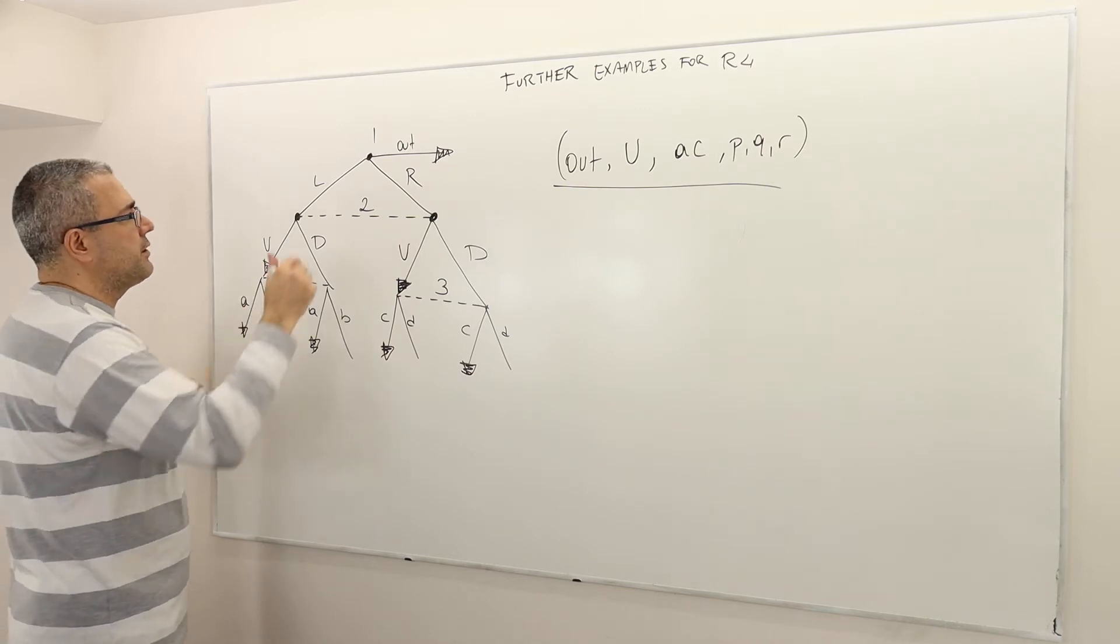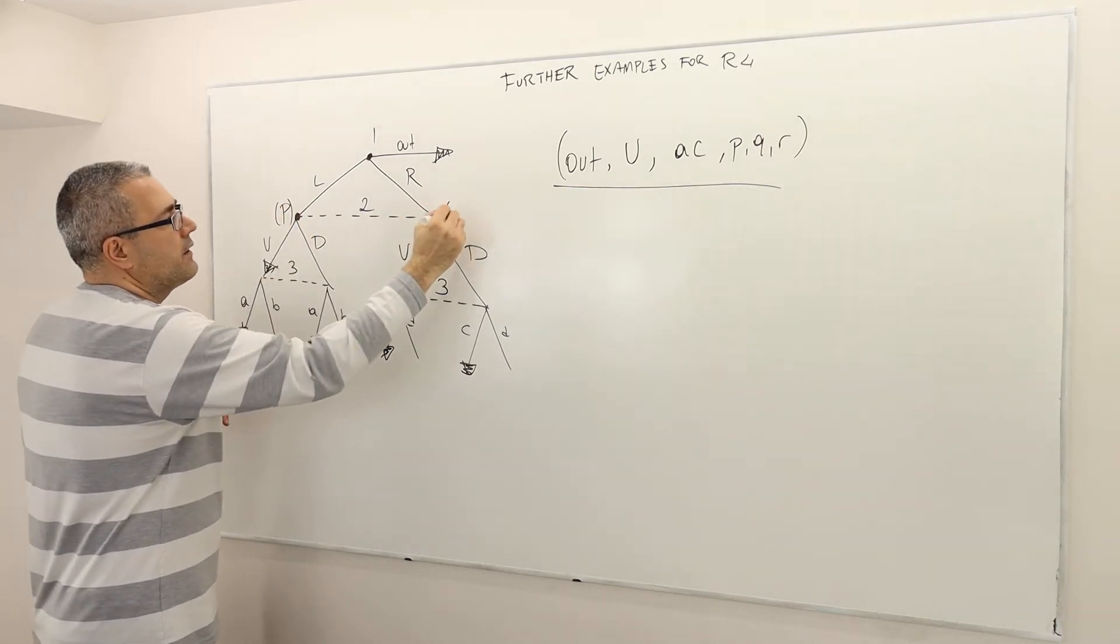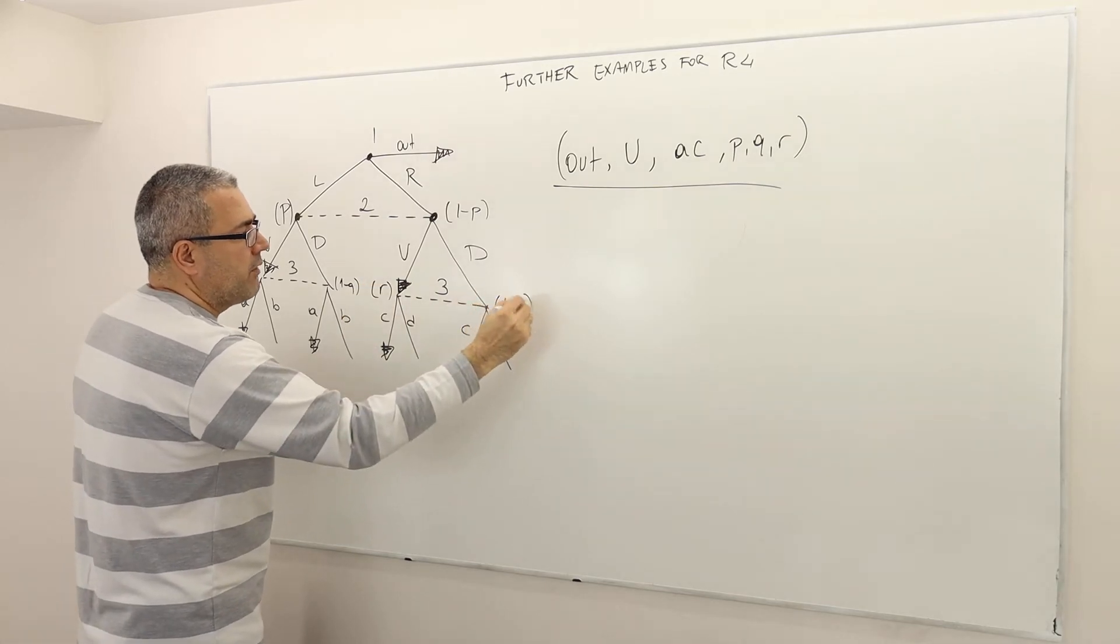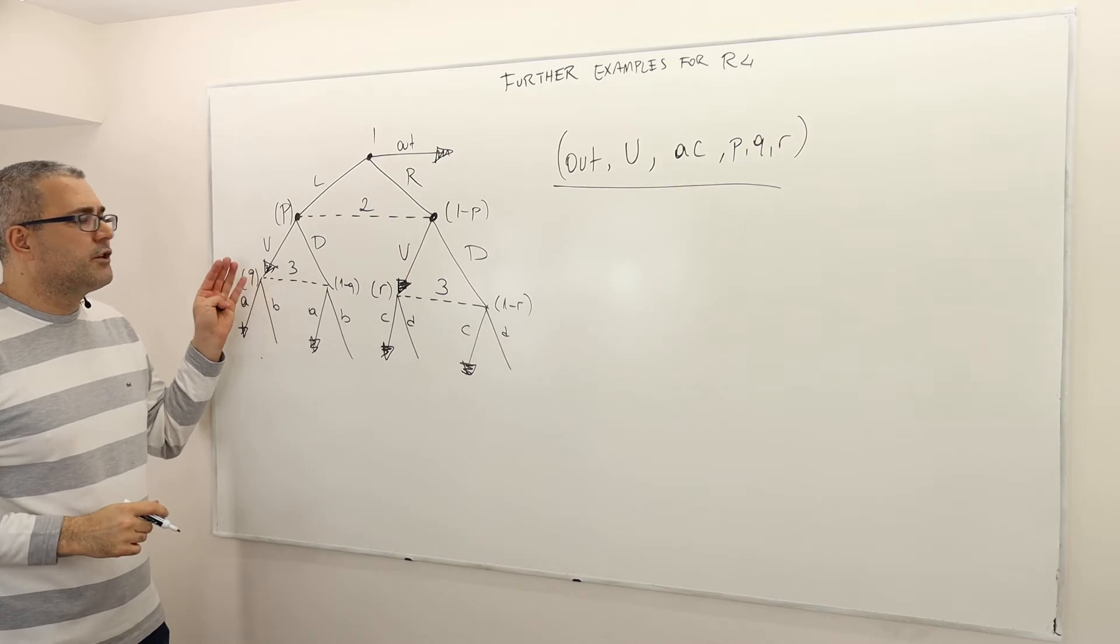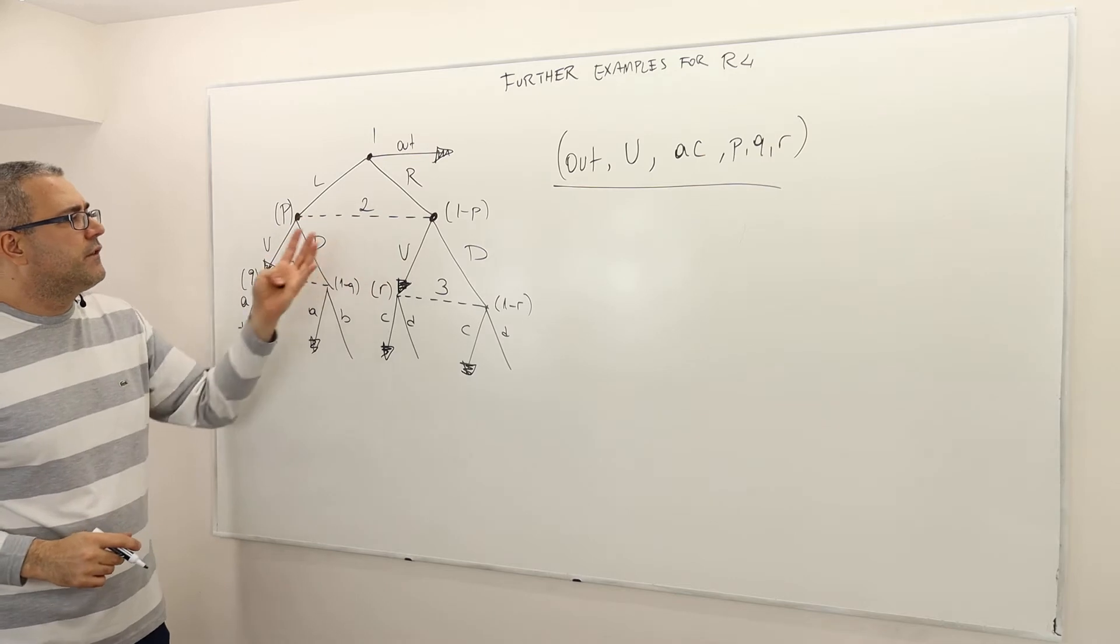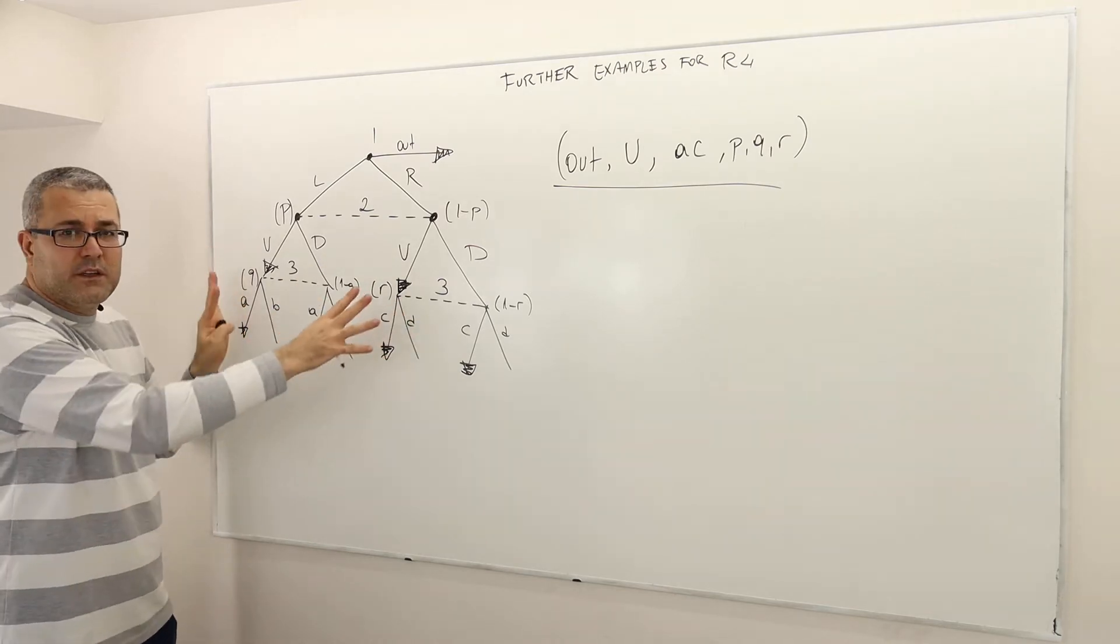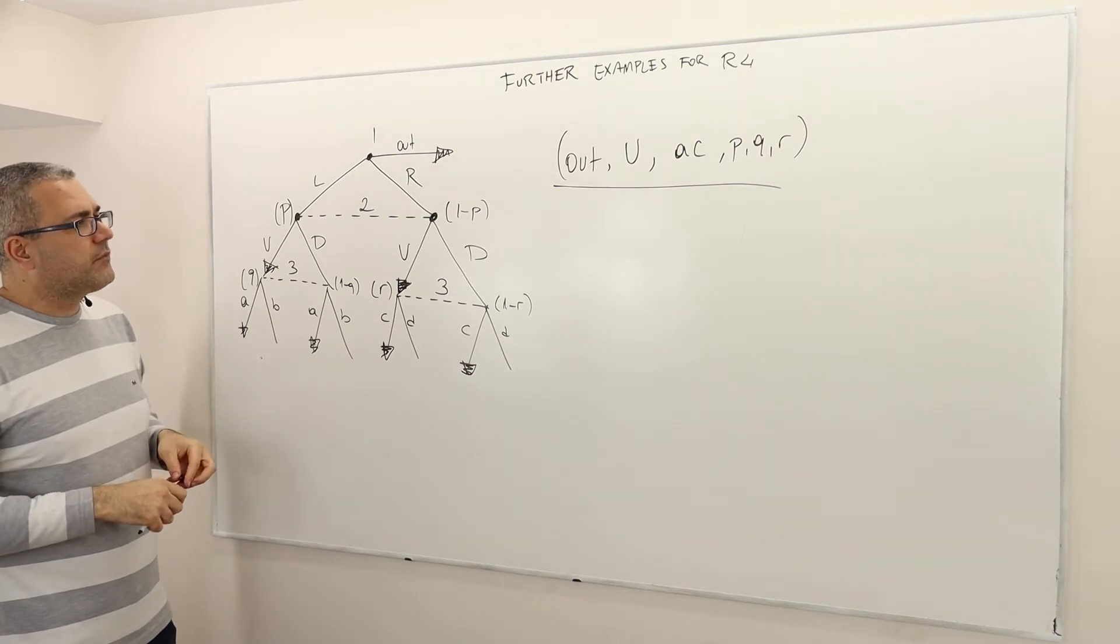Let's call this P and this 1 minus P. This Q, this is 1 minus Q. This is R, this is 1 minus R. Remember, requirement 3 was telling me that there should be probability distribution at each information set. And because each info set has only two decision notes, they're going to be P and 1 minus P. However, for different info sets, the probability distributions can be different.